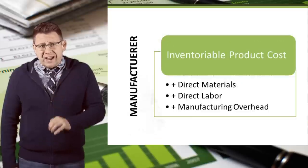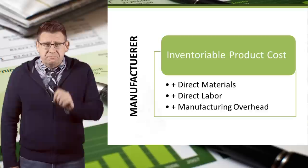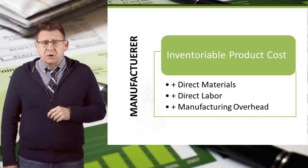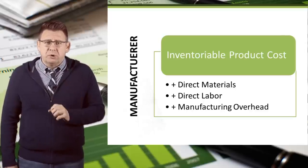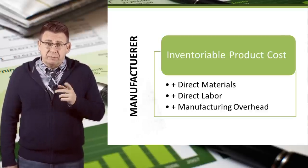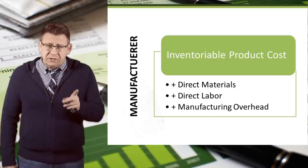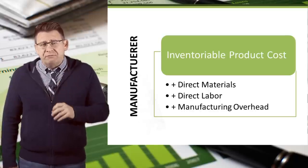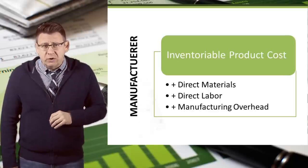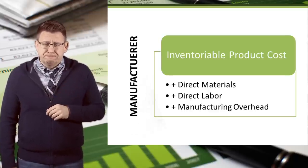Manufacturers have to take raw materials and convert them into finished products. So the inventoryable product costs for manufacturers are direct materials, direct labor, and manufacturing overhead, which is an indirect cost.